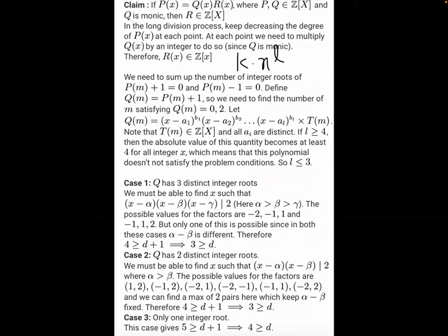Now we need to sum up the number of integer roots of P(M)+1=0 and P(M)-1=0. For ease, define Q(M) = P(M)+1. So we need to find the number of M satisfying Q(M)=0 and Q(M)=2. Let A1, A2, ..., AL be all the distinct integer roots of Q(M), where A1 was repeated B1 times, A2 repeated B2 times, and so on. Let T(M) be some irreducible polynomial factor.